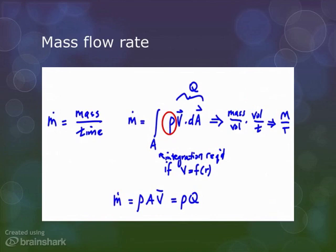Once again, an integration is required if your velocity is a function of r. Otherwise, m dot is simply rho times A times V bar or rho times Q.